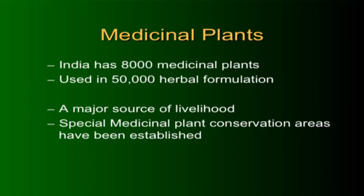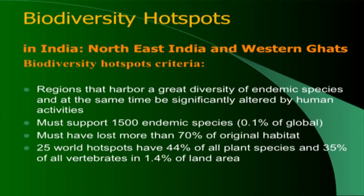India has 8,000 medicinal plants used in 50,000 herbal formulas, and they are a major source of livelihood. Two biodiversity hotspots are Northeast India and the Western Ghats. Criteria for hotspot status include supporting more than 1,500 endemic species and facing significant threats requiring conservation. There are 25 hotspots worldwide.